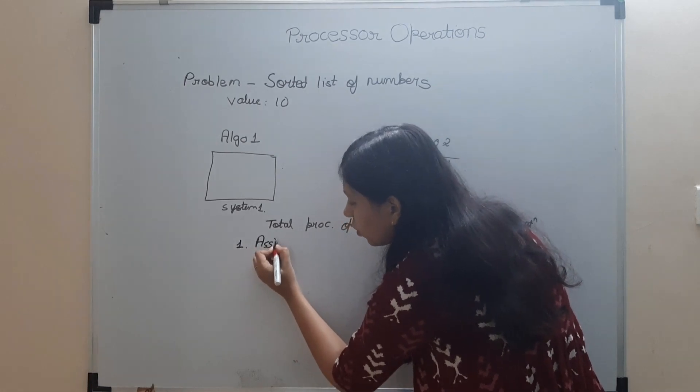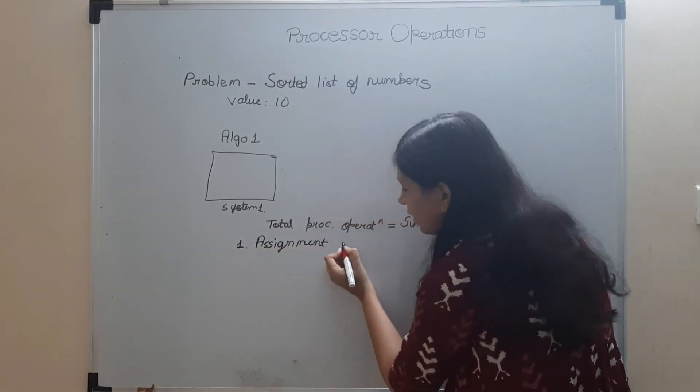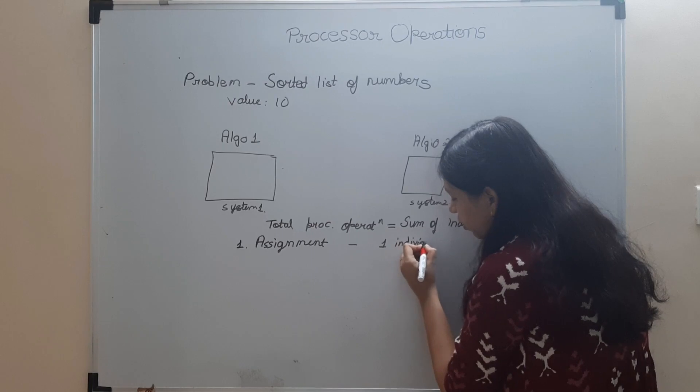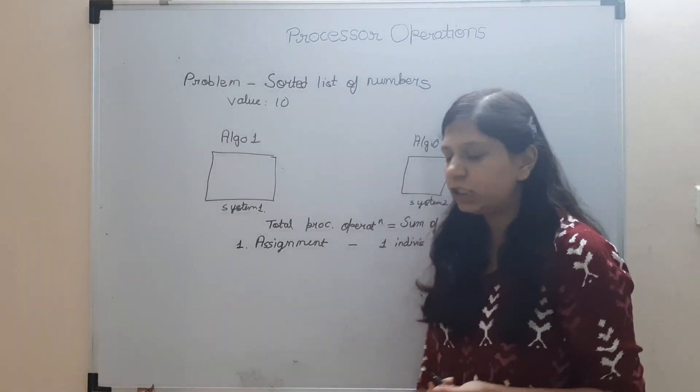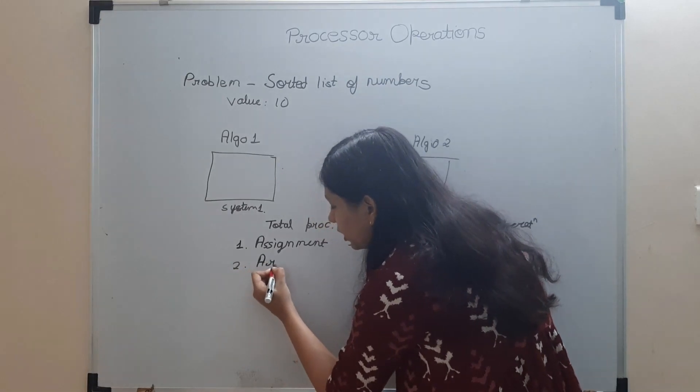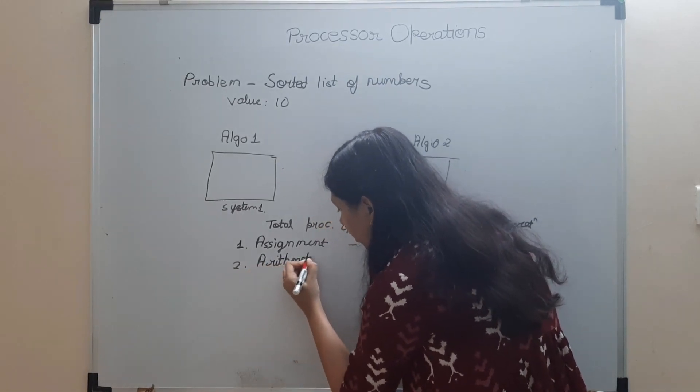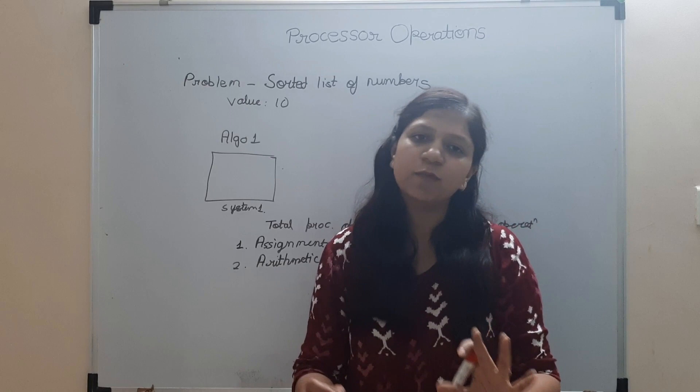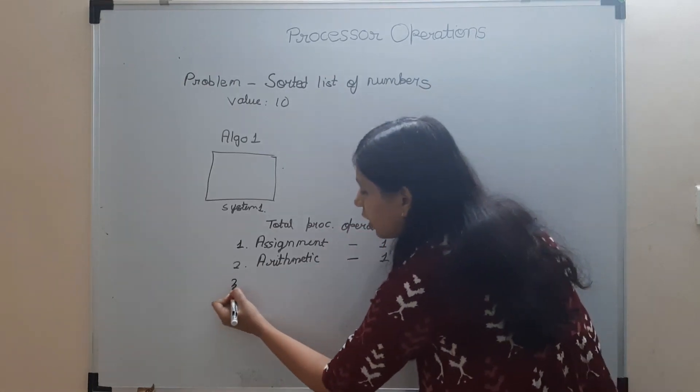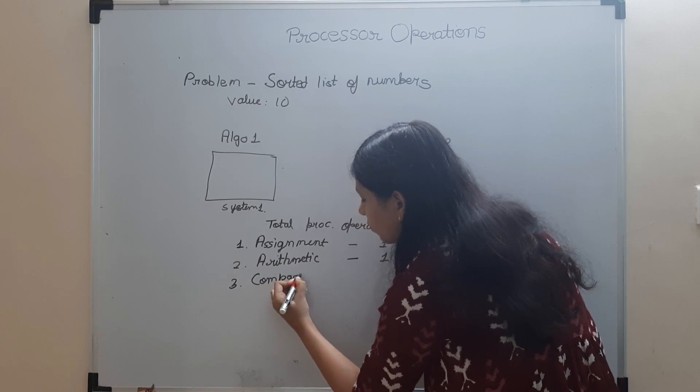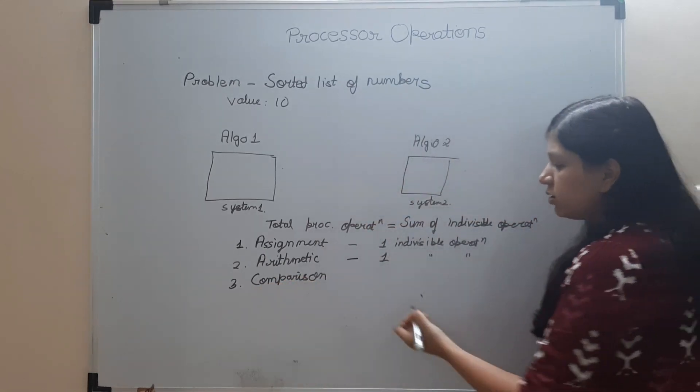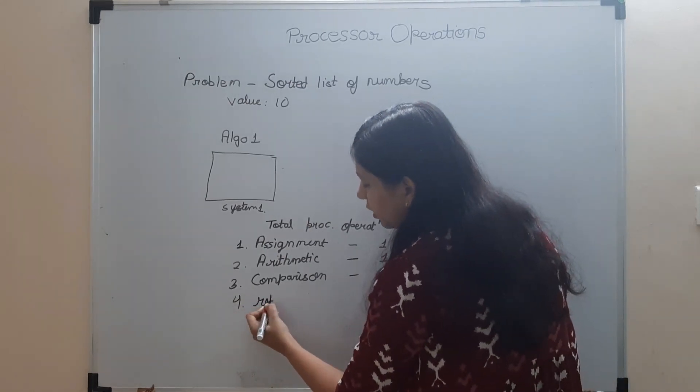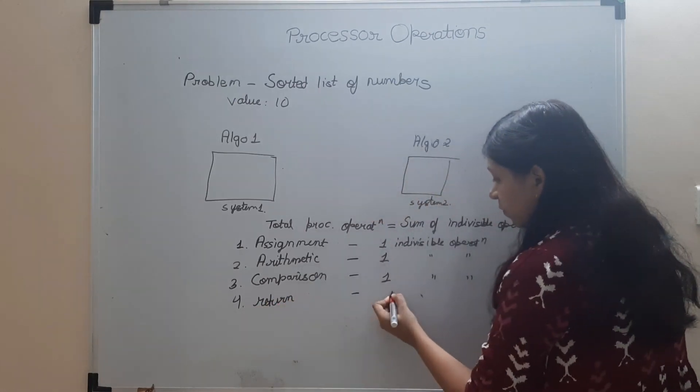What operations do we consider as indivisible operations? Assignment operations - we consider that it gets done as an indivisible operation. Then your arithmetic operation - they also take one indivisible operation. From now on, one indivisible operation I am calling it one operation. Then your comparison - comparison operations, I will call it as one indivisible operation. Then suppose you write a return statement, it is also going to take one operation.